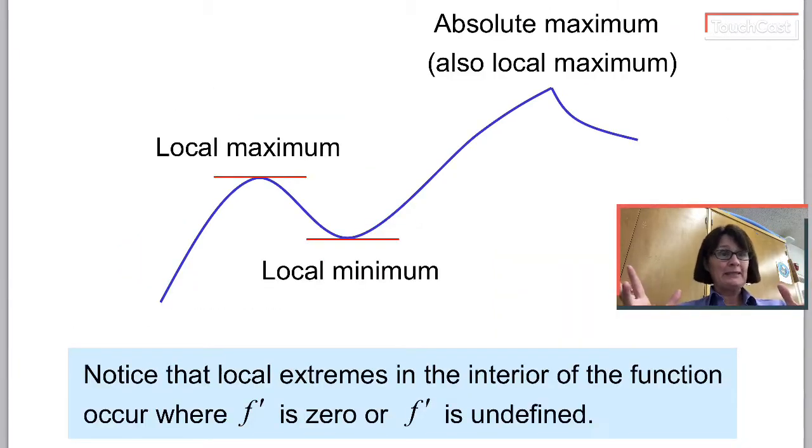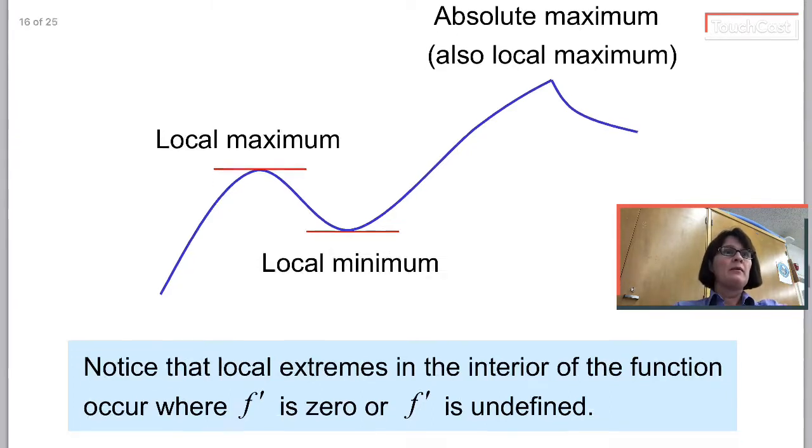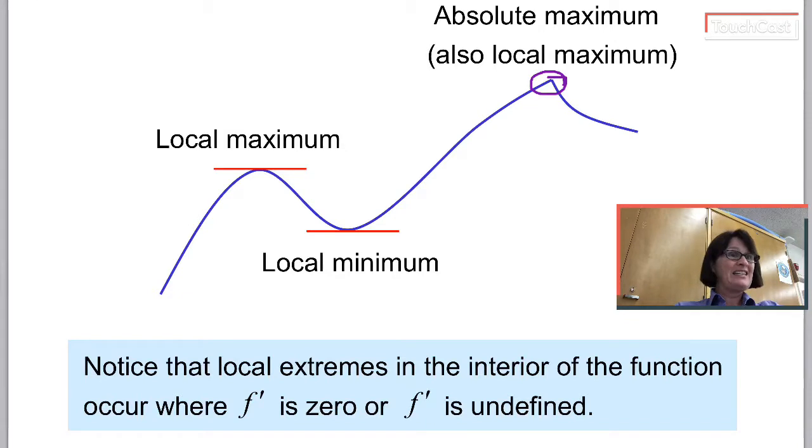Okay, so here's the big deal in 4.1. Any place that we had a local maximum or a local minimum, the kind that everybody agrees on, not the kind that happened at endpoints, but a local maximum or a local minimum, either, see here, a cusp or a corner, f prime would be undefined. Here, horizontal tangent, f prime would be zero. That is true, always. That is so true, it gets a theorem.